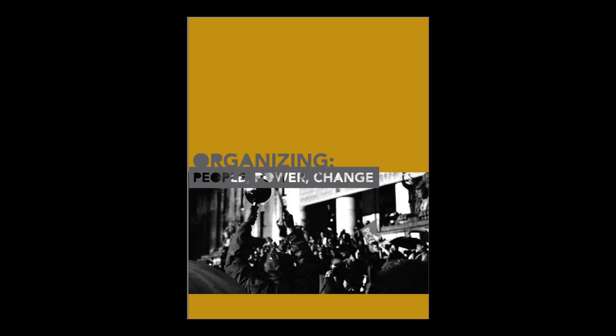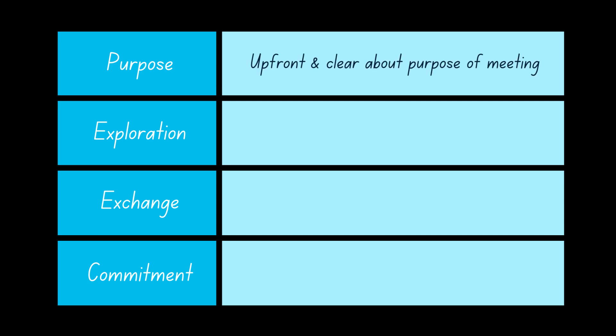Organizing People, Power, and Change breaks a one-on-one down into a four-part agenda. The first step is purpose — being upfront about the purpose of the meeting when you set it and reminding the other person of the purpose at the start of the meeting. The second step is exploration, which is all about asking questions.